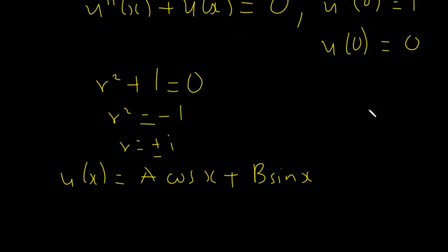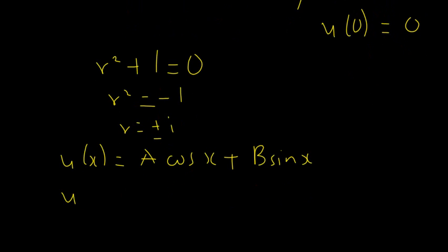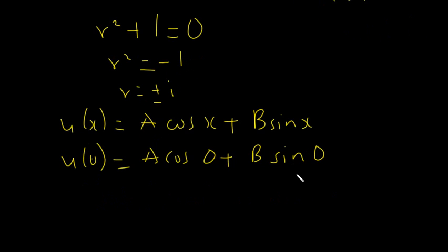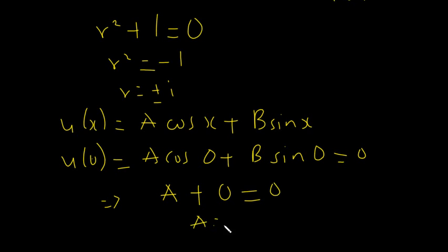Applying the initial conditions: u(0) = A cos(0) + B sin(0) = 0. Since cos(0) = 1 and sin(0) = 0, we get A = 0.